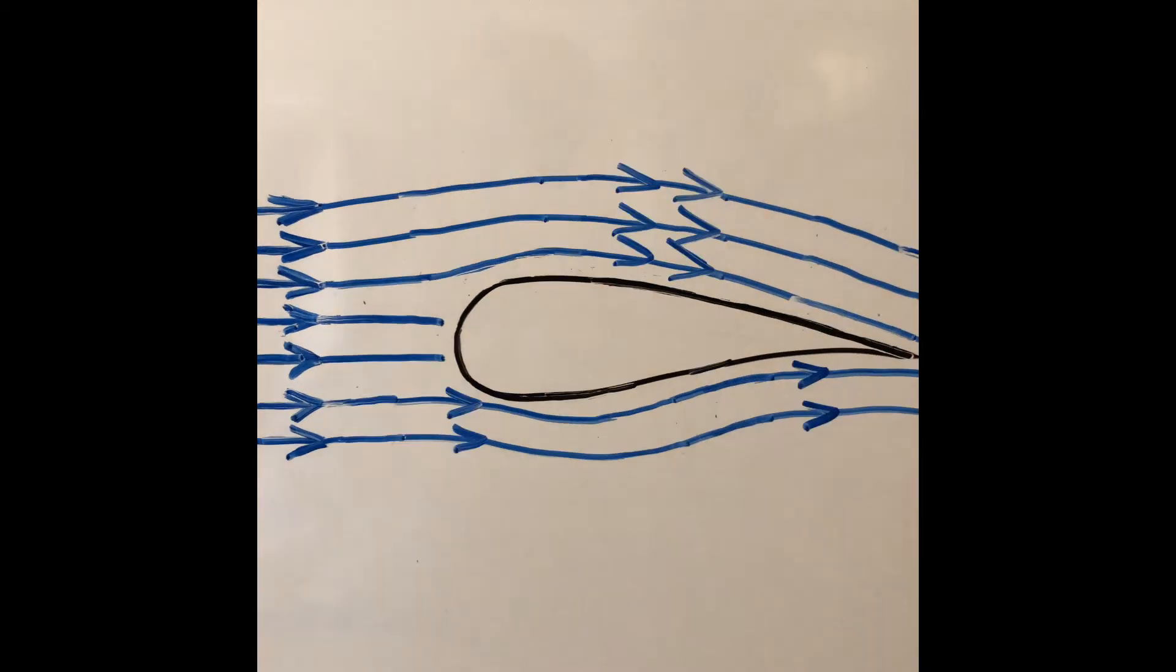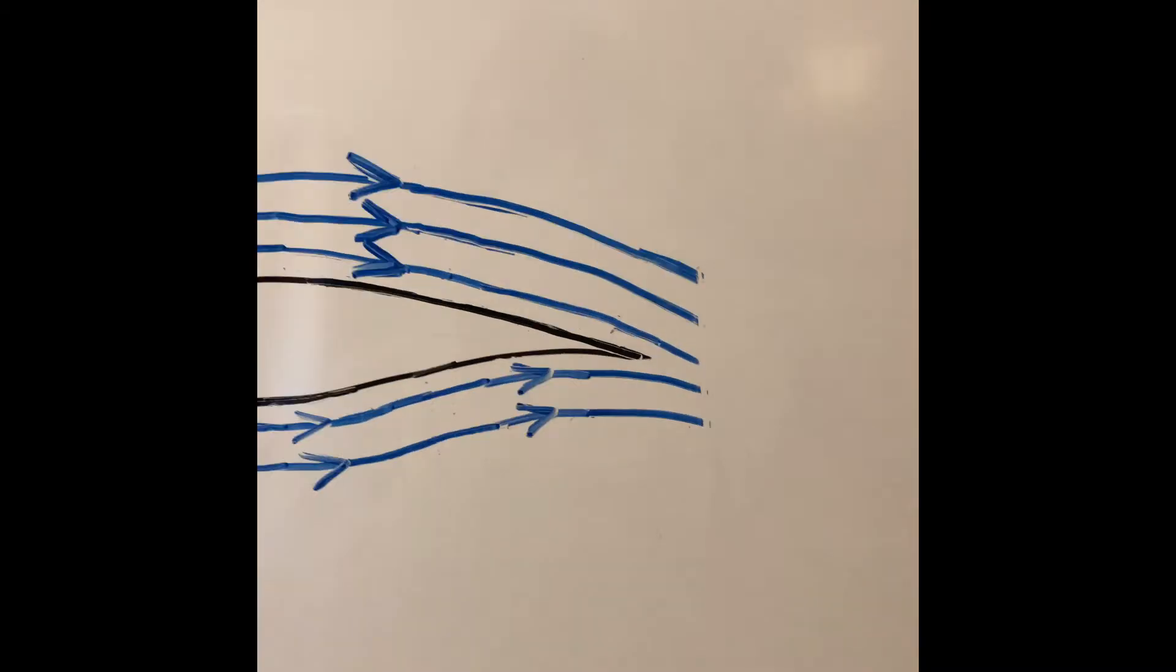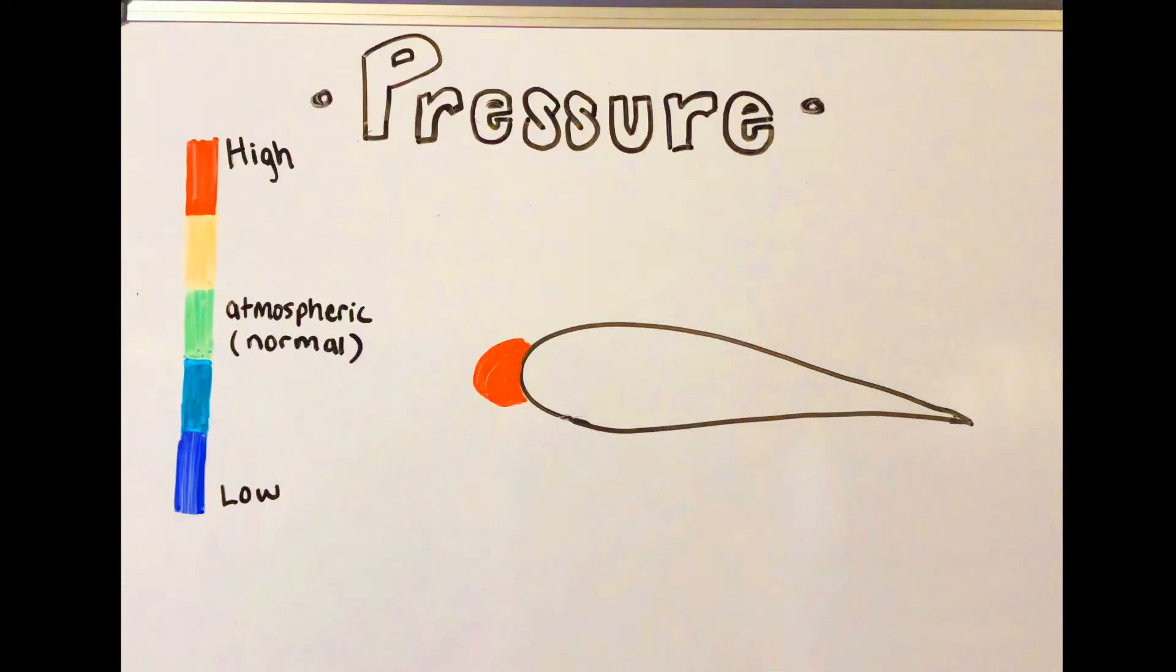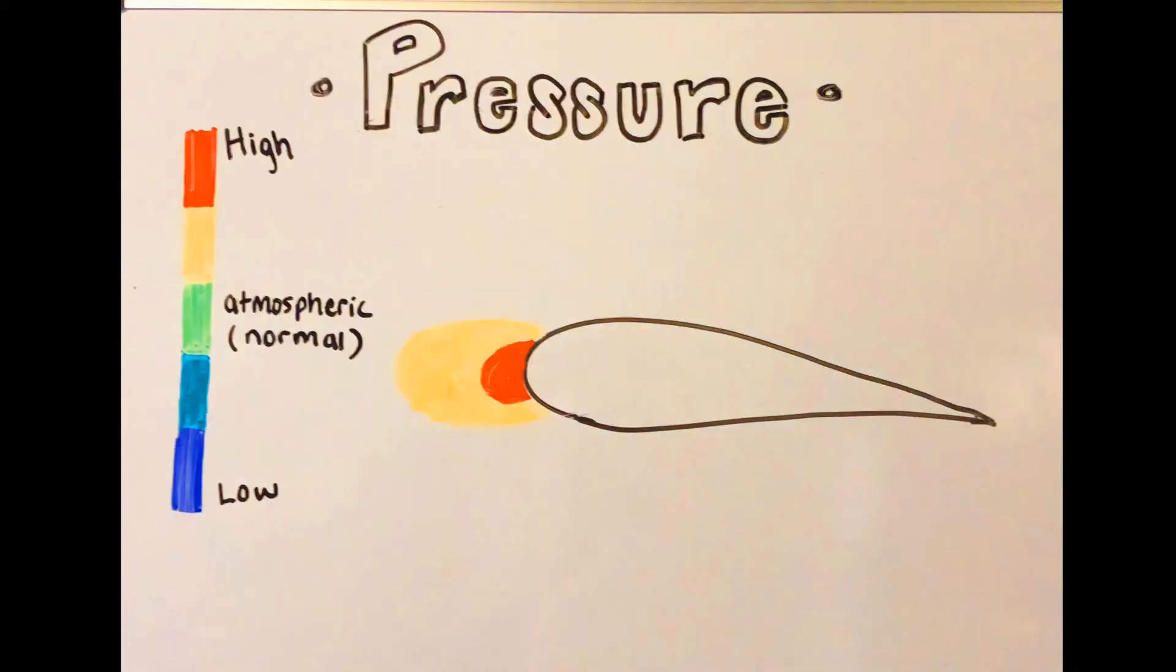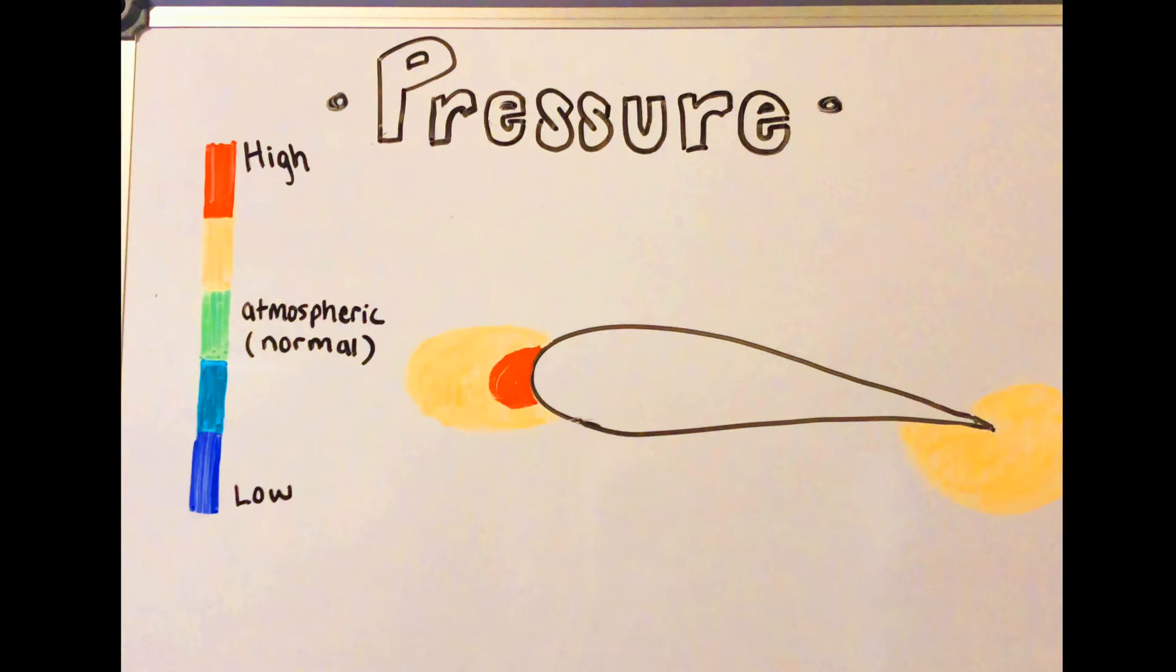Here's a graph of the air pressure surrounding the wing. Notice the small areas of high pressure at the front, where the air hits the wing, and at the back, where the air converges.